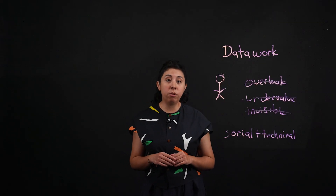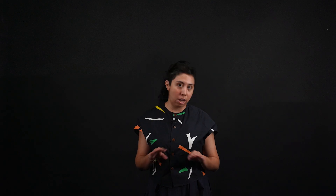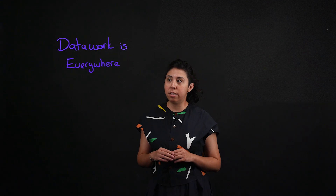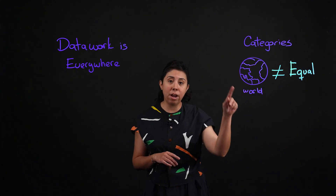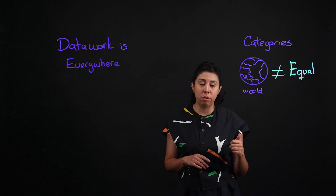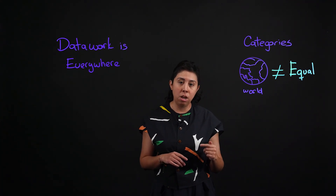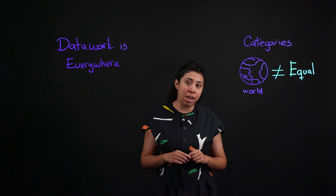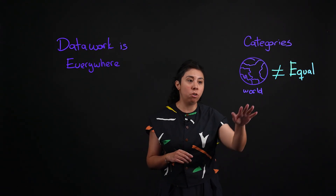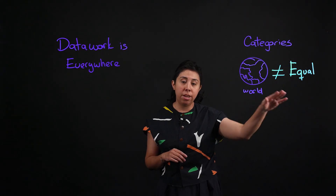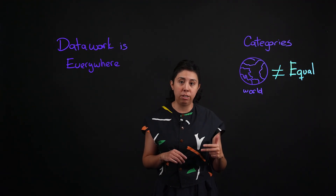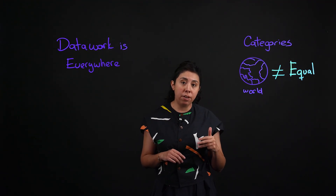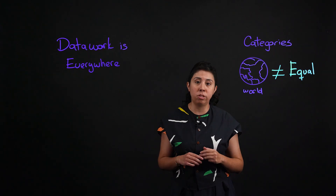It may sound abstract, but data work is everywhere — from how datasets are created to how they are cleaned. For instance, when we choose the categories for a dataset, we're actually deciding who gets to be represented and who doesn't. Most of the datasets used to train AI systems currently do not represent the world equally. They tend to link to certain regions, languages, and perspectives, leaving gaps in how models answer certain questions.